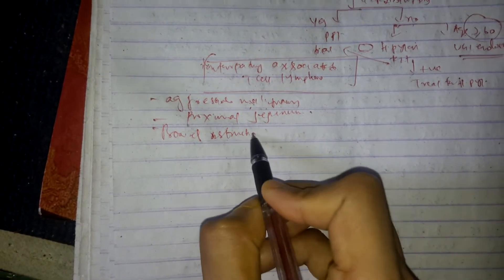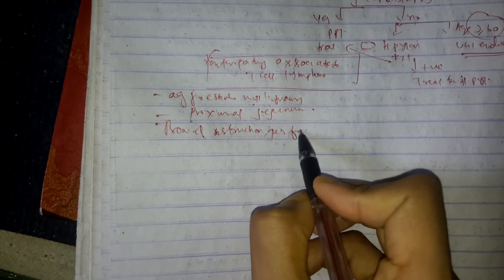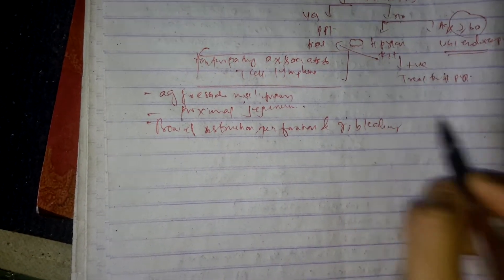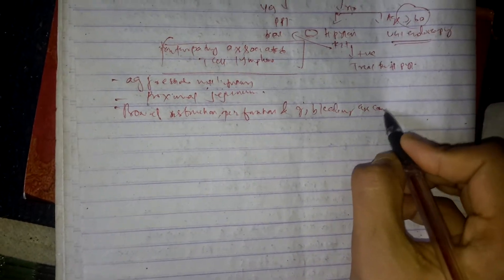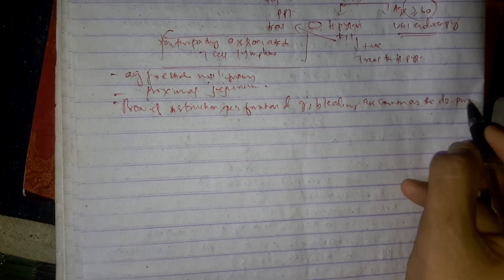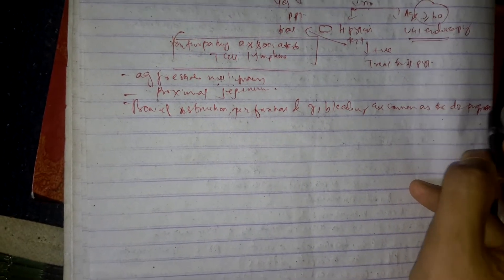Bowel perforation and GI bleeding are common as the disease progresses.